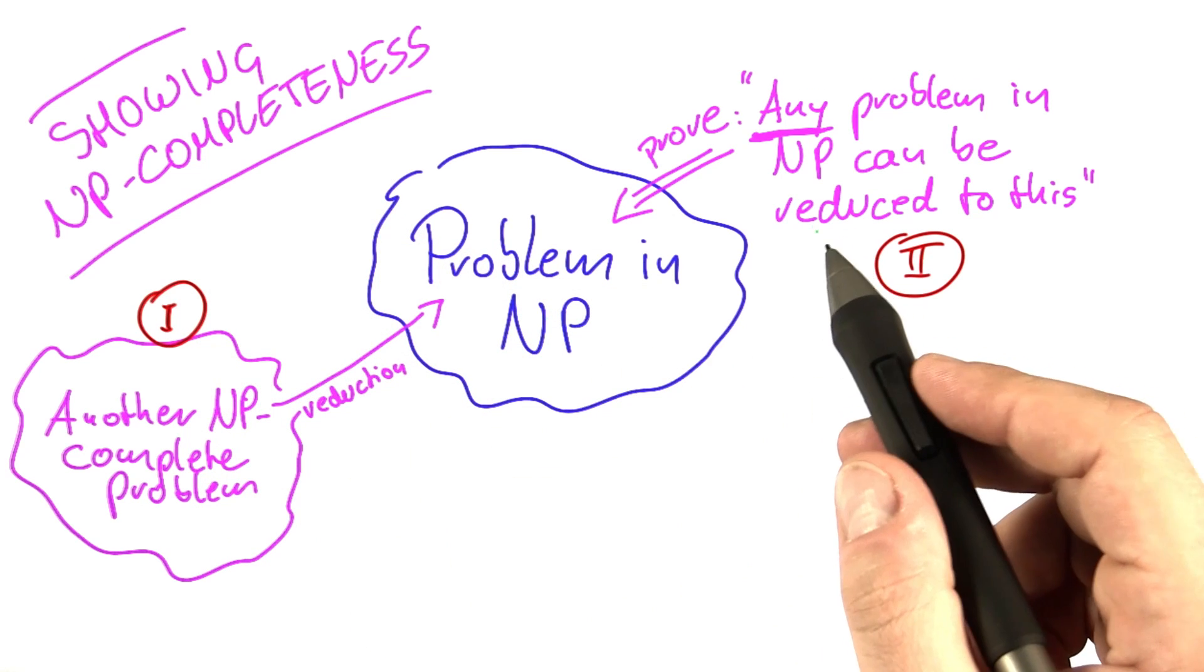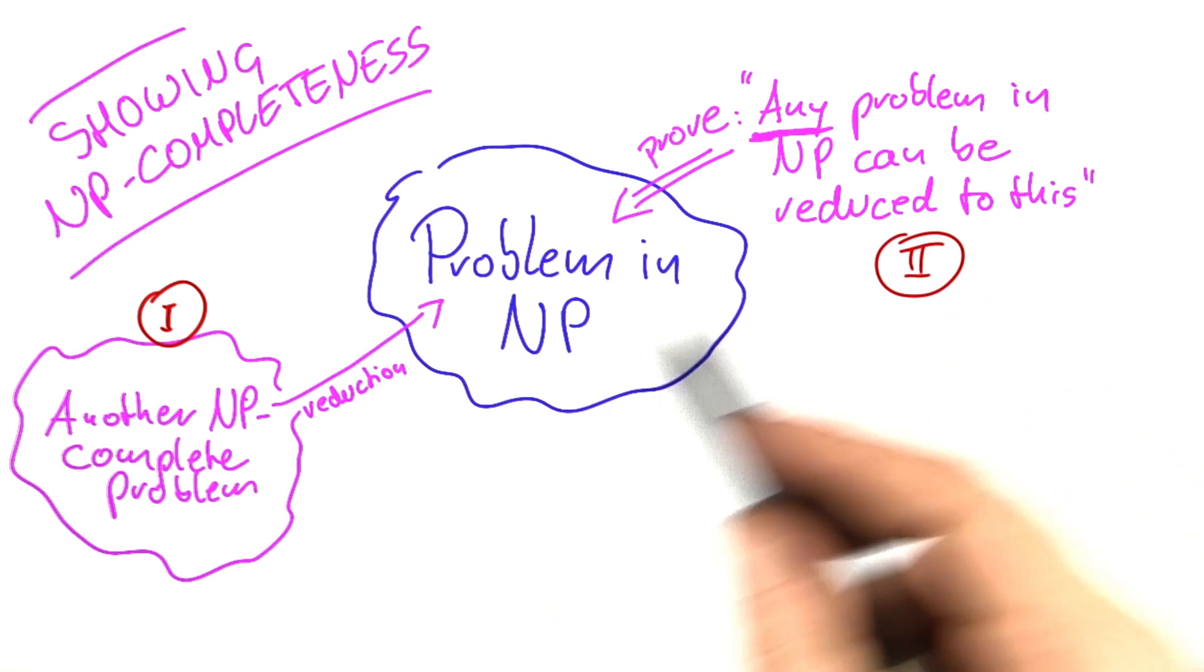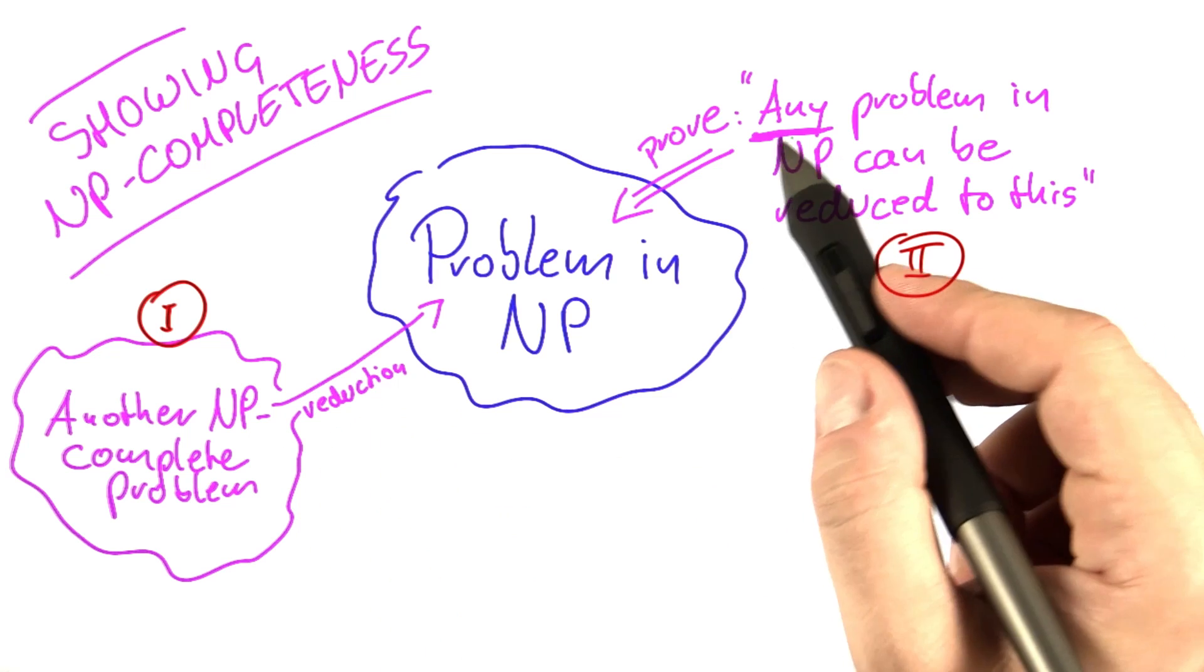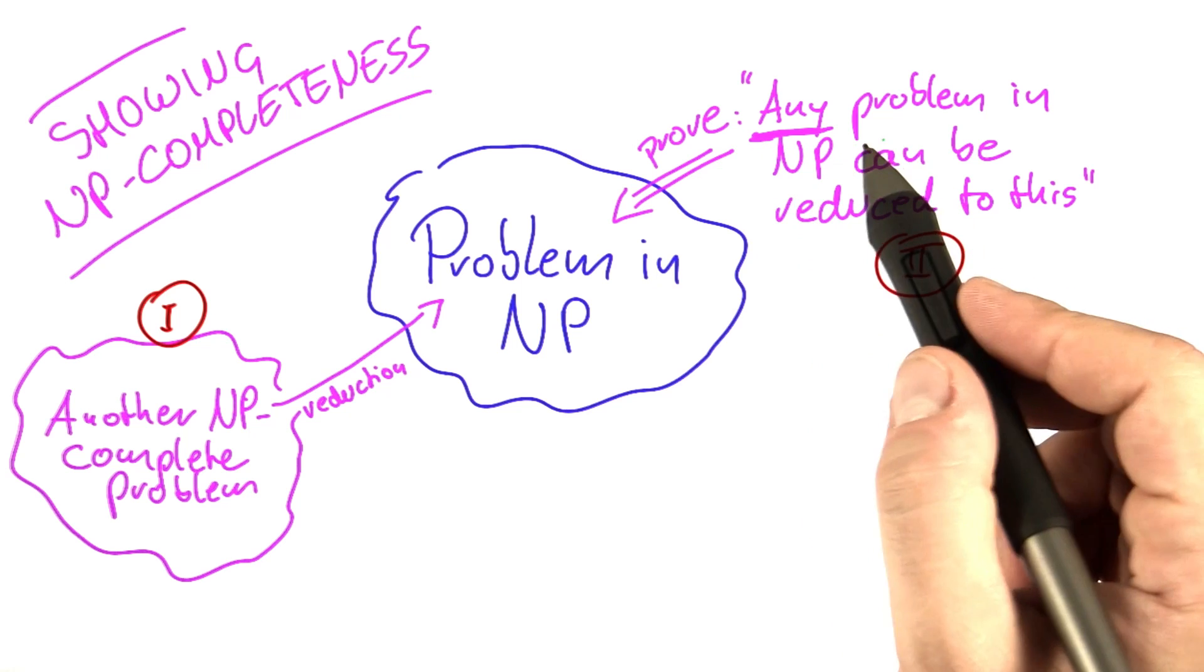Now if you look at those two approaches, this one here sounds much easier than this one because here we just have one problem where we have to have a reduction, and here we have to have any problem, not even some problems, not even a million problems, but really any problem.